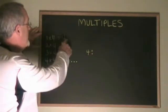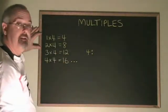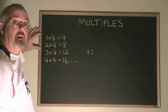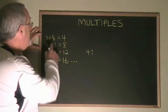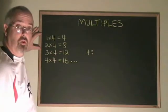The numbers 4, 8, 12, and 16 and so on are called the multiples of 4 because they are the answers we get when we multiply 4 by each of the whole numbers.